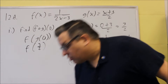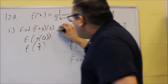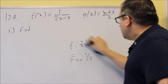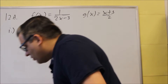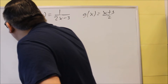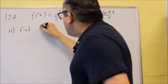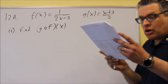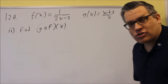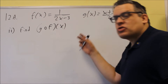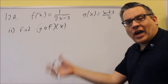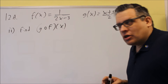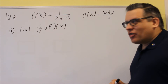So that is part i. Let's look at part ii next. For part ii, they want you to find g of f of x, but it also says write it as a single fraction. Sometimes there may be special instructions like factor or write it as a single fraction that we have to pay attention to. So we're going to do g of f of x.